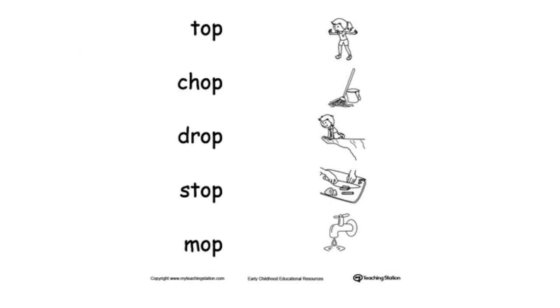Now let's do an activity with the op words. We have to read the words on the left and match them with the pictures on the right. Let's look at the first one: t-o-p, top, top. Where's the top? You can be on top of something. If we look at the pictures, the best picture will be this top.